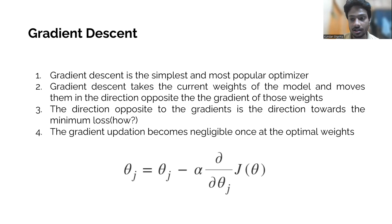If the gradient is positive, then that means that if we increase our weights, then the loss will increase. And if the gradient is negative, then that means that if we decrease our weight, then the loss will increase.